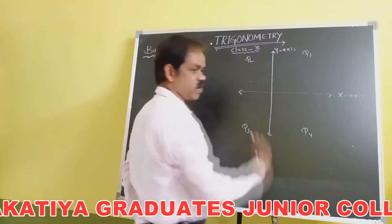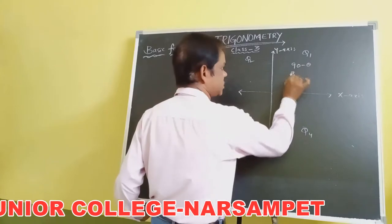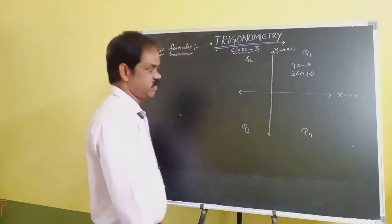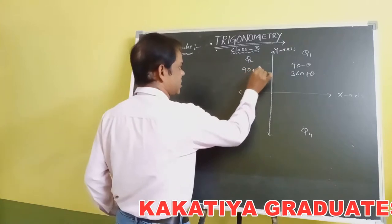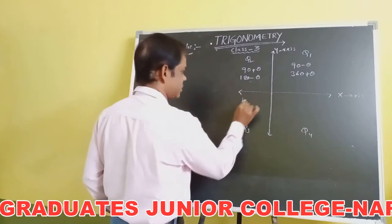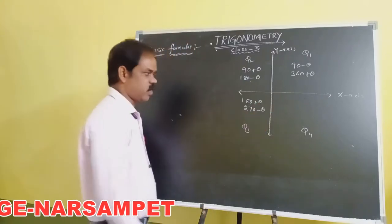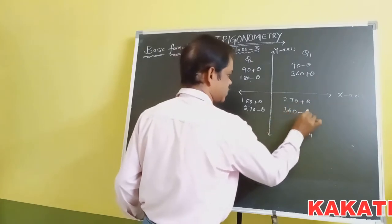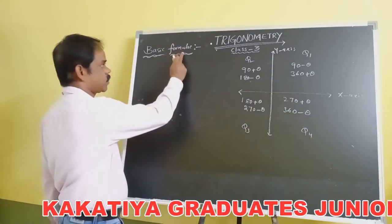In the first coordinate, we consider angles 90 minus theta and 360 plus theta. In the second coordinate, consider 90 plus theta and 180 minus theta. For the third coordinate, consider 180 plus theta and 270 minus theta. For the fourth coordinate, consider 270 plus theta and 360 minus theta. By using these four coordinates, we have some basic formulae in trigonometry.